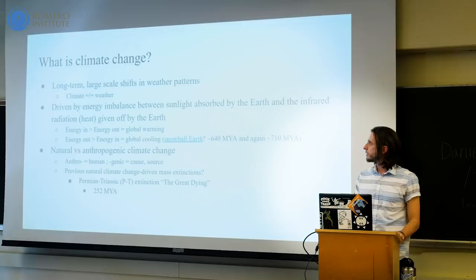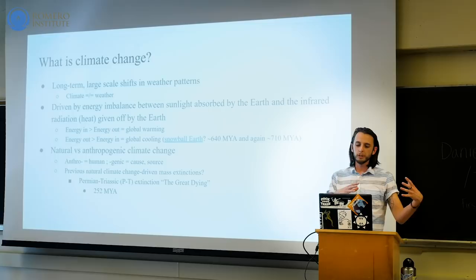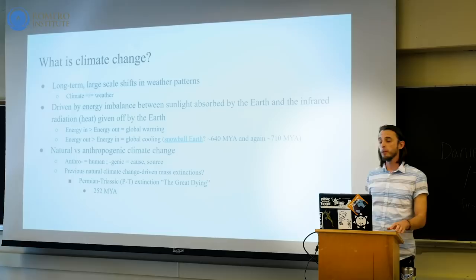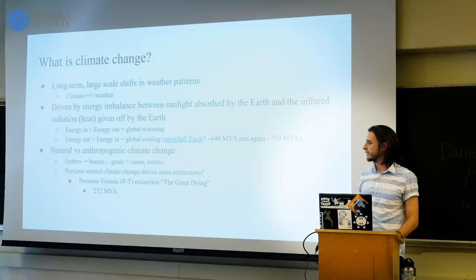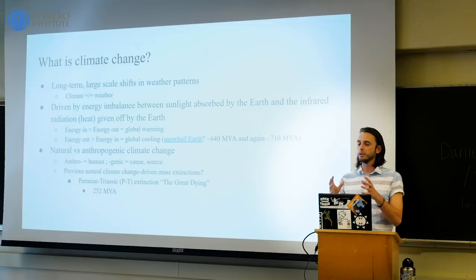If you have more energy coming in than going out, you're warming the planet. If more is going out than coming in, you're cooling. Global cooling has happened before — about 640 million years ago and again about 710 million years ago. Scientists call that a snowball Earth, or slushball Earth, because there's still debate about whether the equator froze over. These types of extreme climate changes are very hard to recover from once you get out of them.